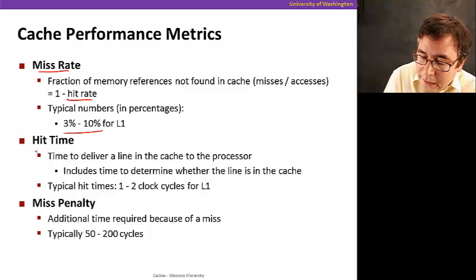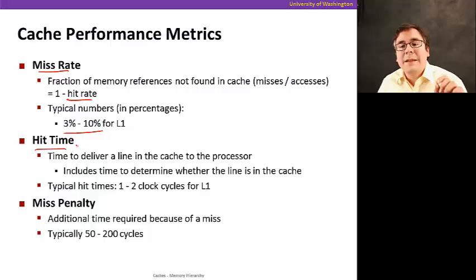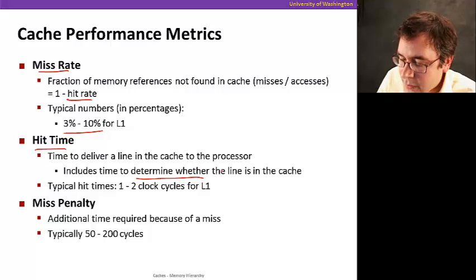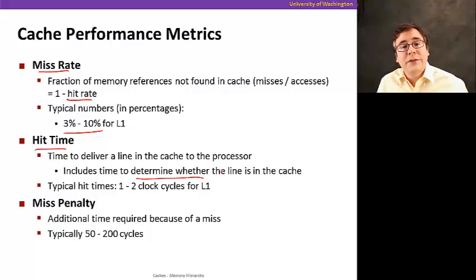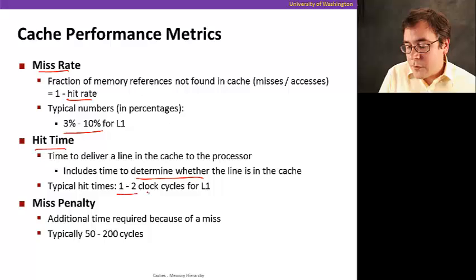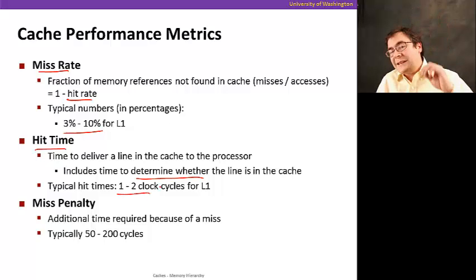Now, the hit time is the time it takes to deliver a cache line that's in the cache to the processor so you can consume the data. And that also includes the time to determine whether the line is in the cache or not. That's why in the previous example, we included the hit time even when computing the overall miss penalty. So now the typical hit times for L1 is between 1 and 2 processor cycles. That means that the L1 cache is very, very fast.